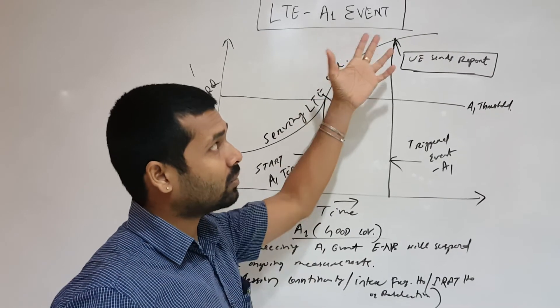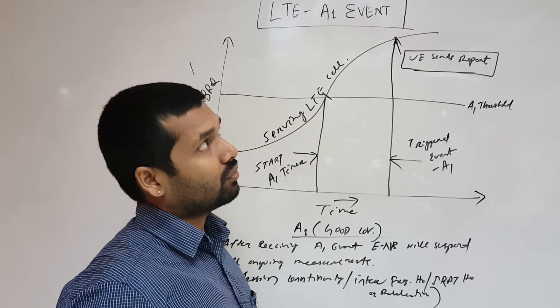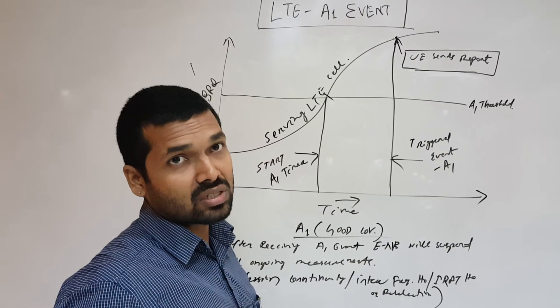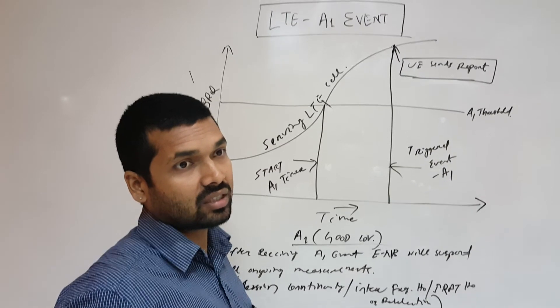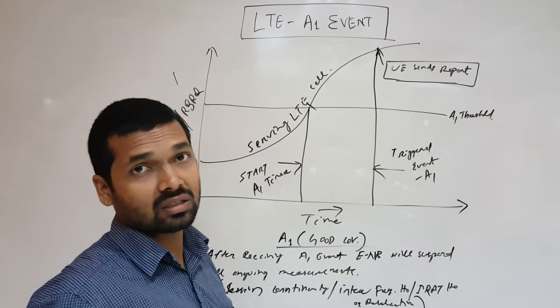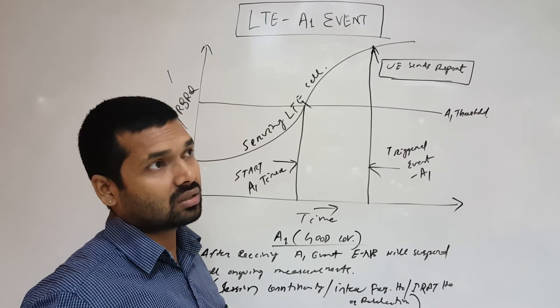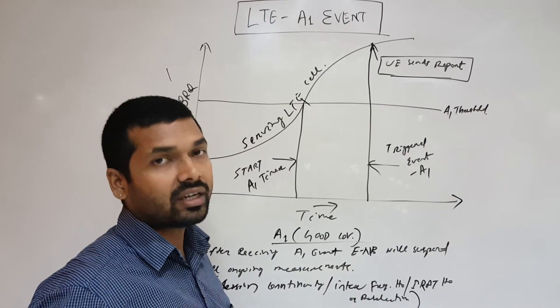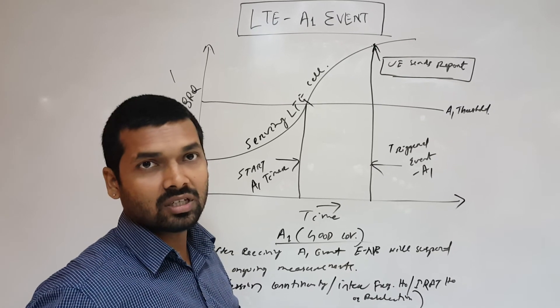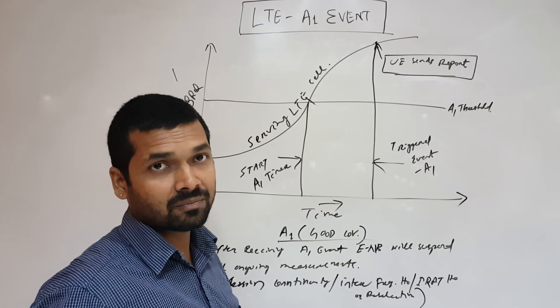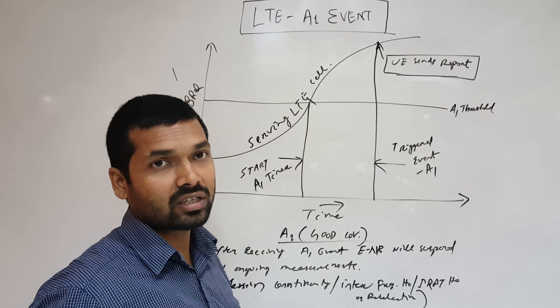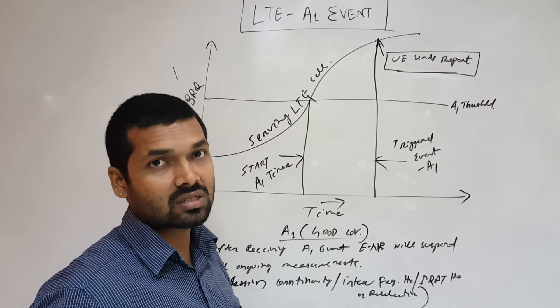Where we have no need to do any frequency measurements, either intra, inter, or inter-RAT measurements, and we can continue until the A2 is not triggered. What is A2 will be checking out in the next session. Please watch the next videos for A2 updates. Thank you.